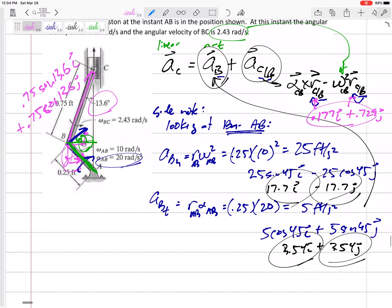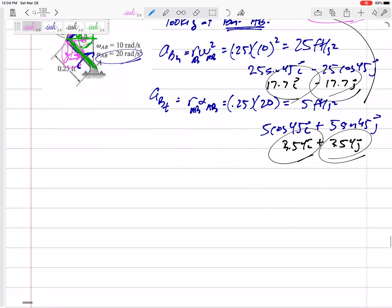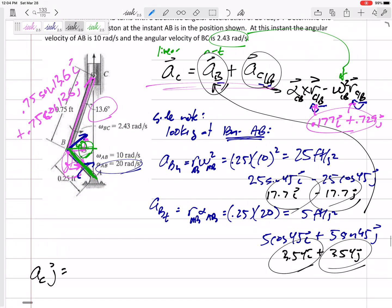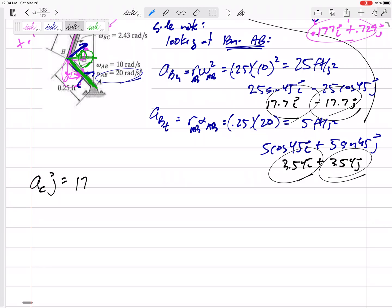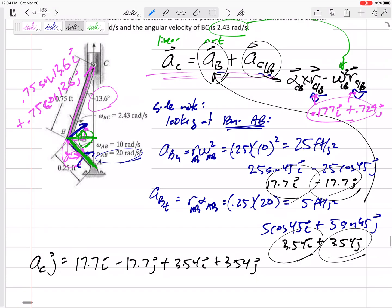Okay, now I think I'm ready to plug in. Let's look back at the heart of our problem. a_C, it was a_B plus a_C/B. Let me rewrite a_C/B as alpha cross R minus omega squared times R. So this would be a_C. I don't know it, but I know all of it. a_C, all of it is in the J direction. And that's all I have on the left-hand side of my equation. On the right-hand side, that a_B is 17.7 I minus 17.7 J. 3.54 I, 3.54 J. That was only that term right there.